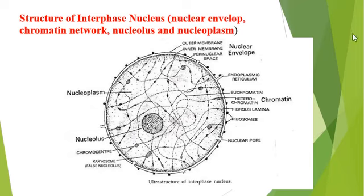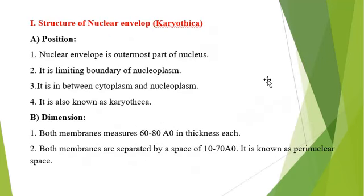Good morning students. Today we will discuss the structure of the interface nucleus. In this interface nucleus there are four parts: nuclear envelope, chromatin network, nucleolus, and nucleoplasm. In the last video I talked about the nuclear envelope; today we see the remaining parts.